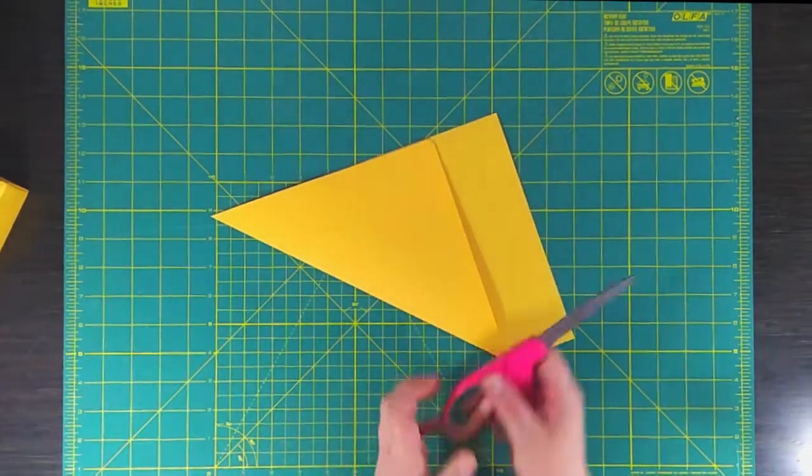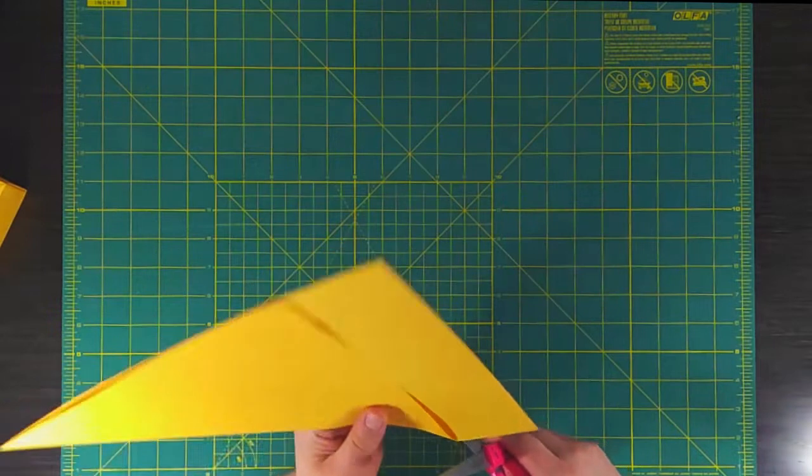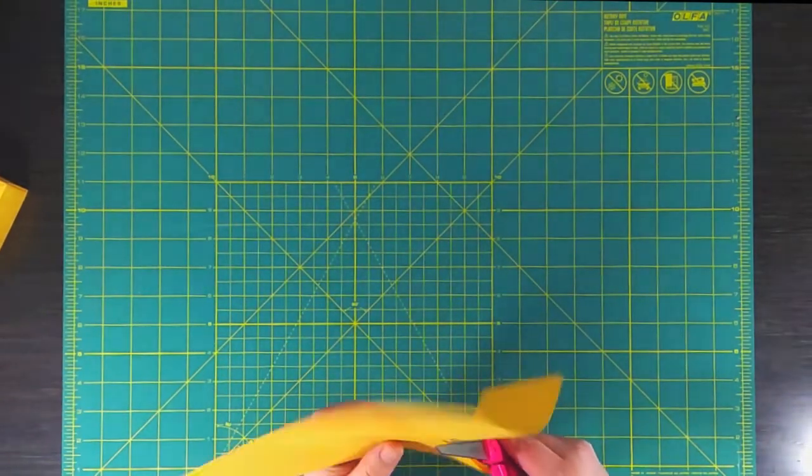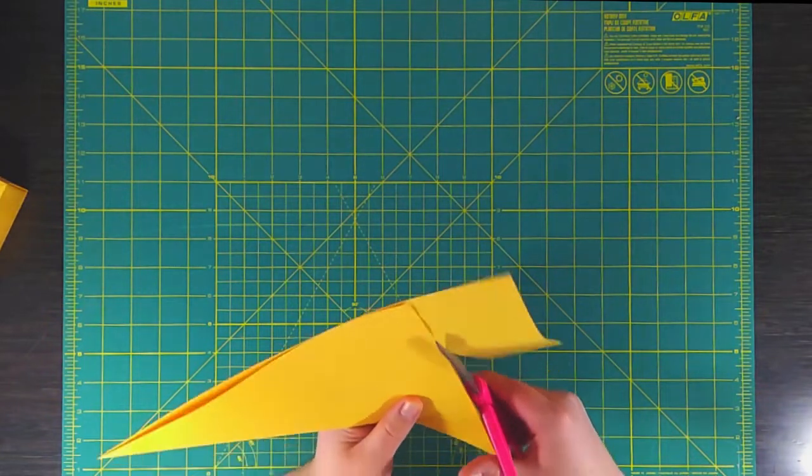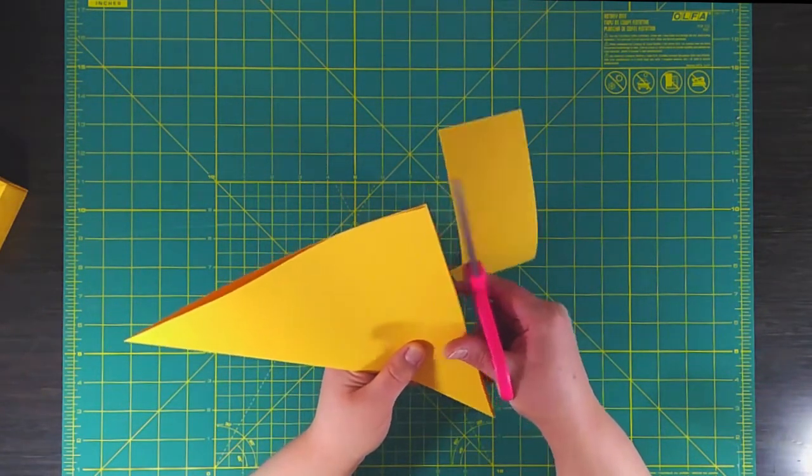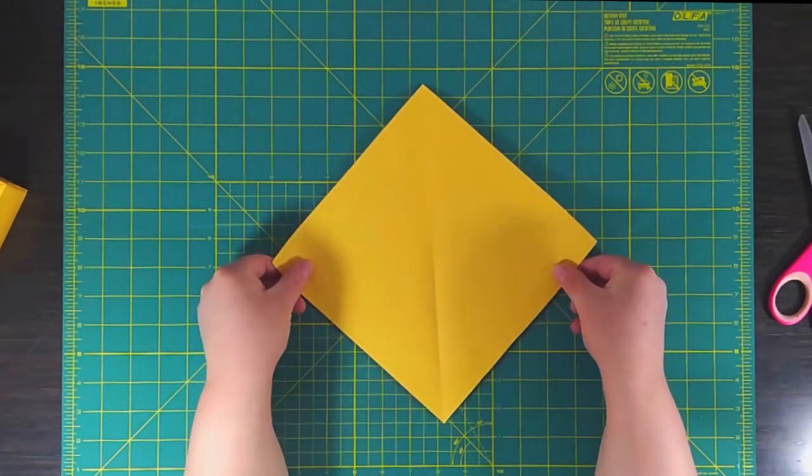And then you're going to trim off the excess and please use parental supervision. Okay, go ahead and discard that. And now we've already made our first fold.